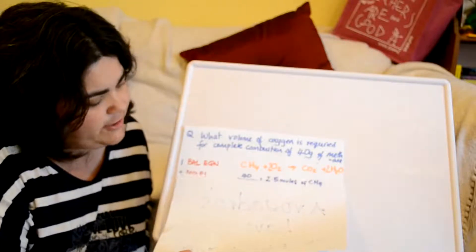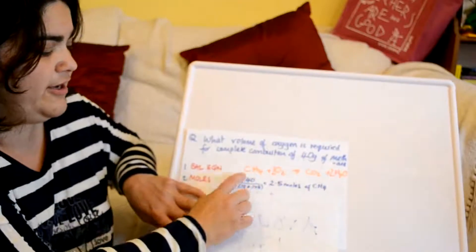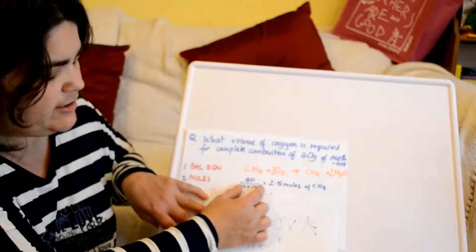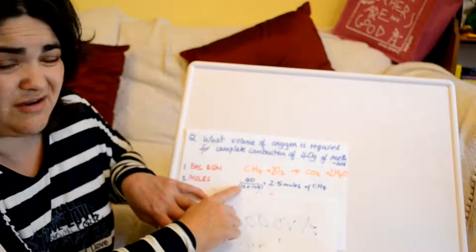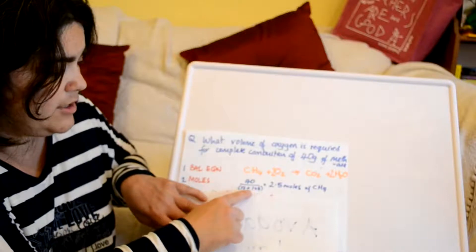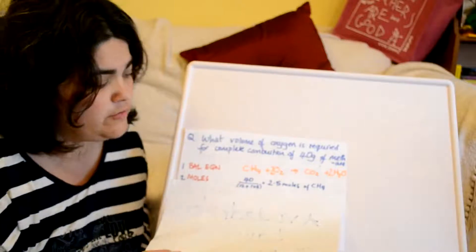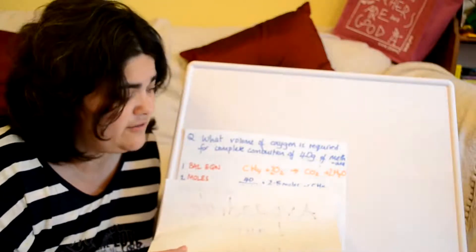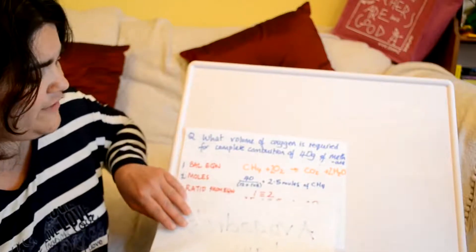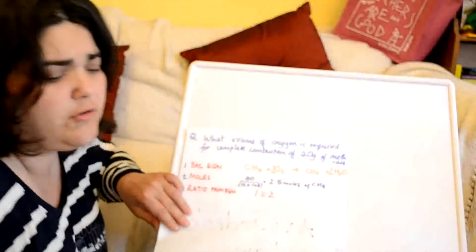That was our example. I'm going to do another one before we go on to rearranging questions. Pause the video, write it down, and have a go yourself — this is how you should be trying it at home. The question: what volume of oxygen is required for the complete combustion of 40 grams of methane? By this point you should know what methane is and be able to balance equations on your own — you've been doing this since C1 in year 10.